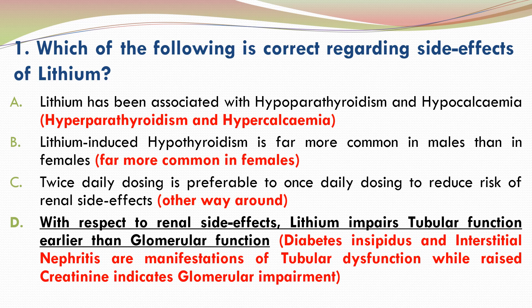A is incorrect because lithium has been associated with hyperparathyroidism and hypercalcemia. B is incorrect because lithium-induced hypothyroidism is far more common in females, similar to hypothyroidism in general which is also much more common in females. C is incorrect because once daily dosing is preferable to twice daily dosing to reduce risk of renal side effects due to lithium.